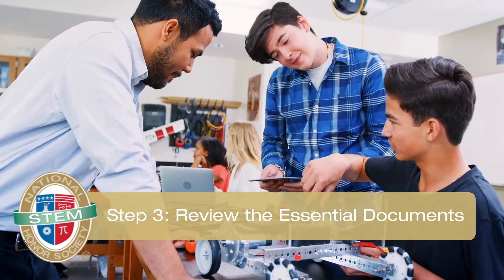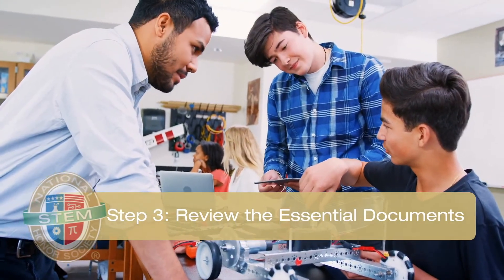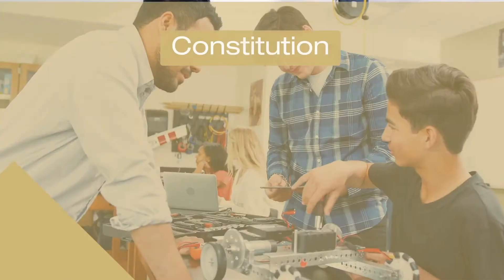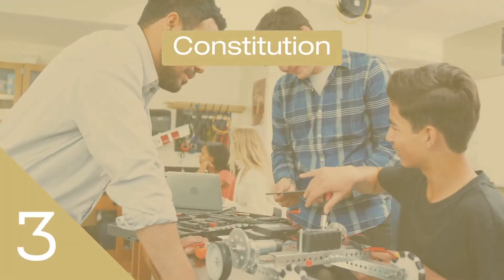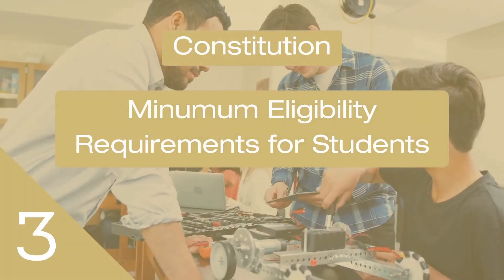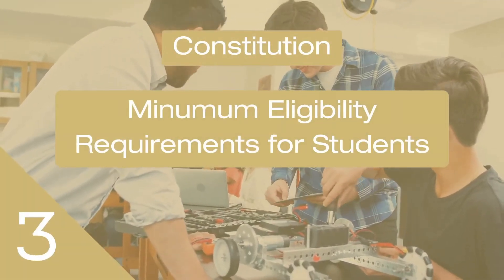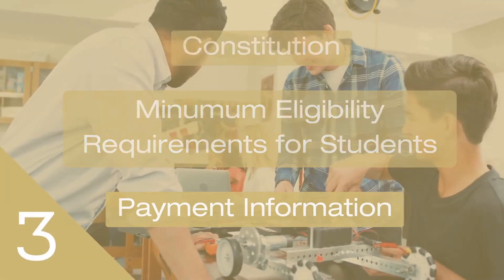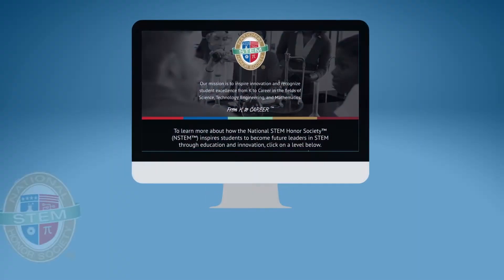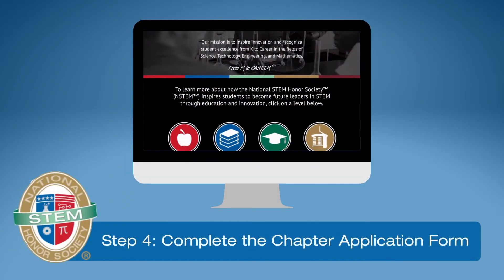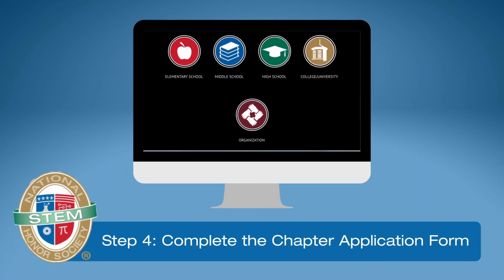Step 3. Review the essential documents: the Constitution, Minimum Eligibility Requirements for Students, and Payment Information. Step 4. Have your school complete the chapter application form.